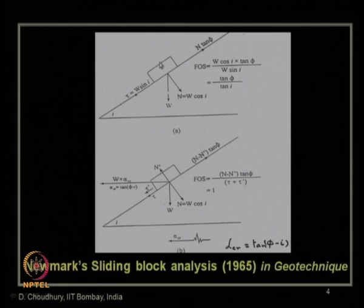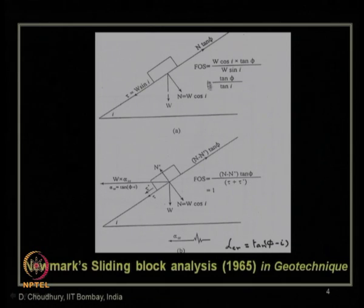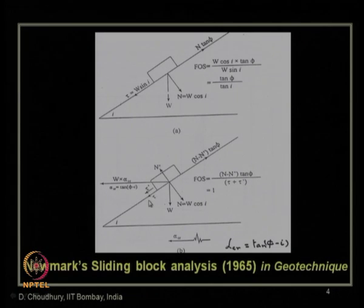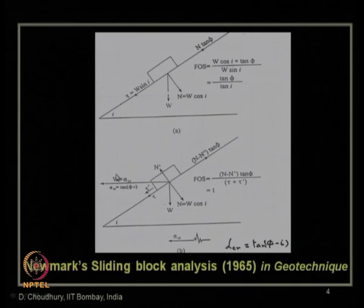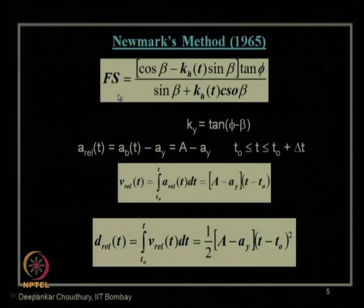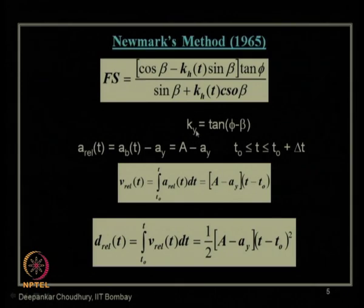We studied how a sliding block mass can tend to slide through sloping ground and how to determine the factor of safety considering the additional pseudo-static inertia force. When we equate the factor of safety to 1, the resulting seismic pseudo-static acceleration is referred to as yield acceleration. This is the equation to obtain the factor of safety against any movement of a soil block and how to estimate the yield acceleration coefficient.